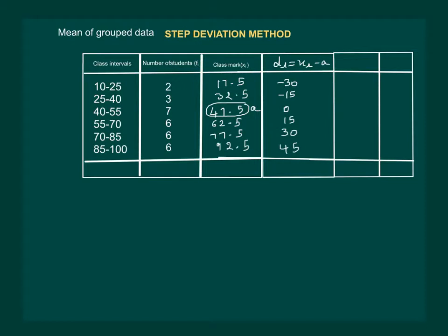We start with finding A, that is the middle value of Xi. Then we find the deviation Xi minus A, after which our method changes.